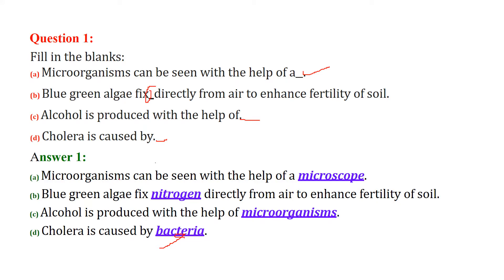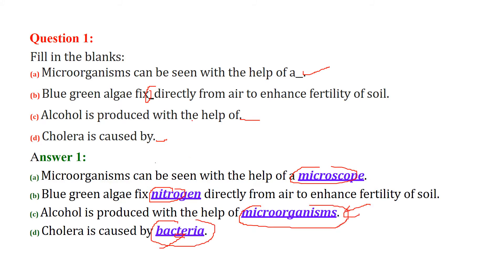Now let us see the formal answers. Microorganisms can be seen with the help of a microscope. Blue-green algae fix nitrogen. Alcohol is produced with the help of microorganisms — this is the generic answer — and cholera is caused by bacteria.